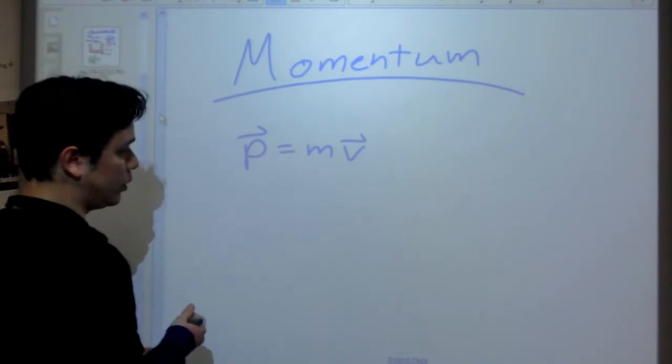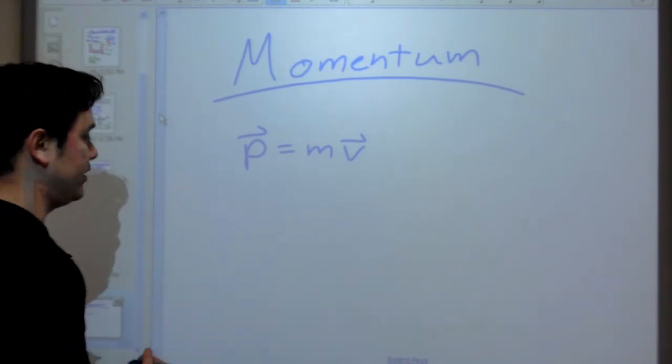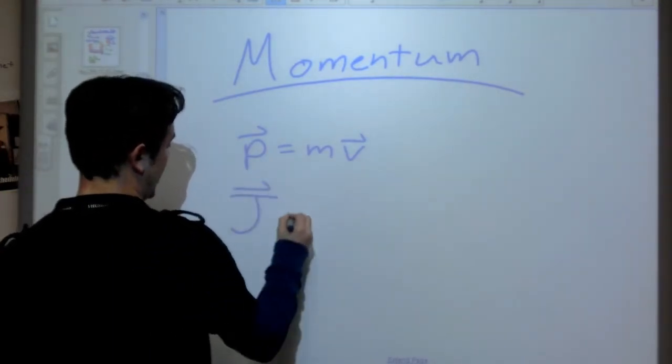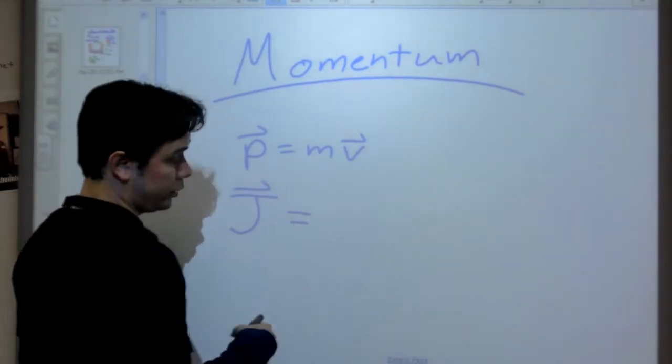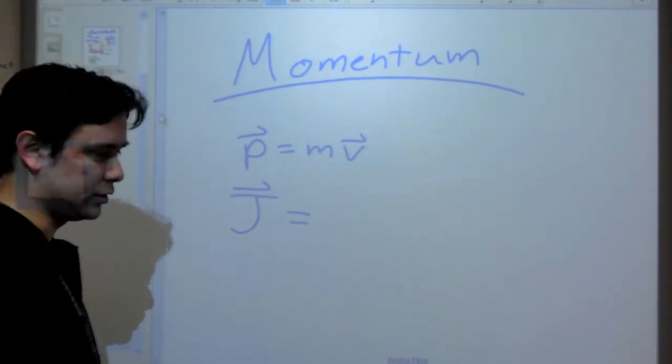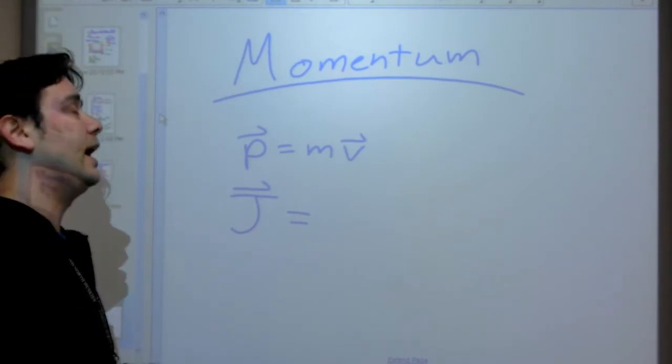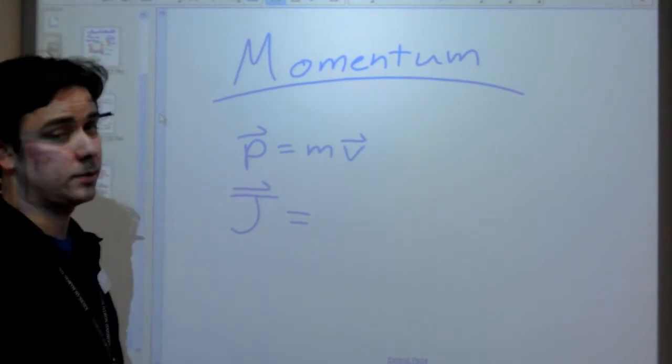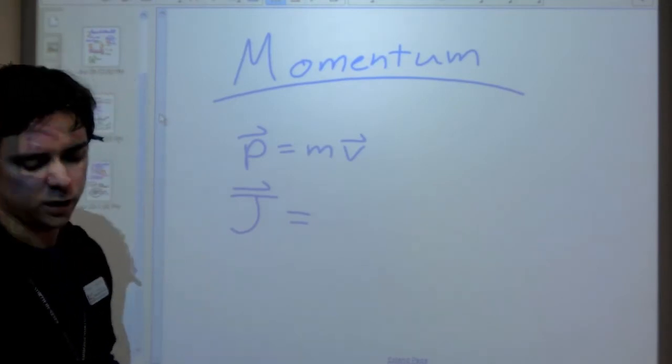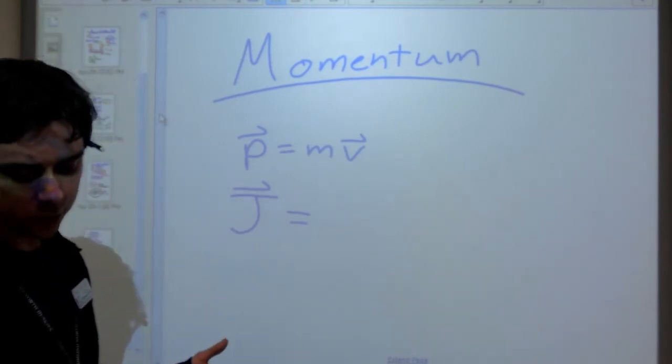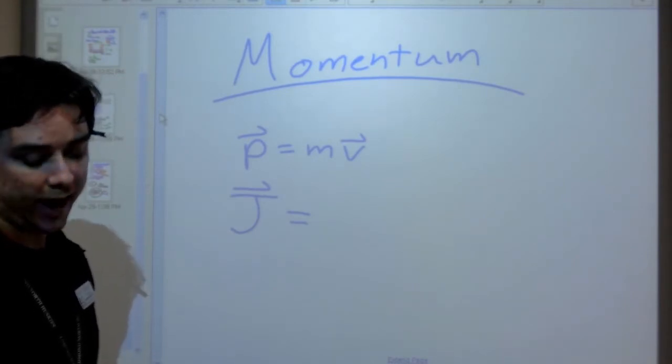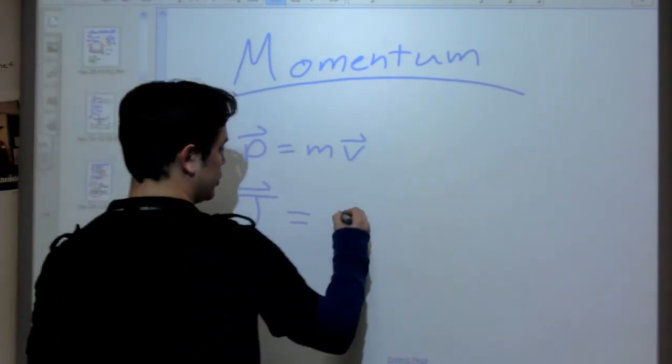The other one that we had, and when we covered it in class, I used a capital I with a vector sign. It turns out that the standard is apparently a J. This is impulse, one of the reasons why I used the I. But I shows up a bunch of other times as moment of inertia for rotational mechanics. And even more importantly, it shows up as current in electricity and magnetism. So it helps if we have something a little bit different. So we're going to go with a J. But it's impulse. For those of you who were in my class this year, you may have it in your notes as a capital I with the vector sign.